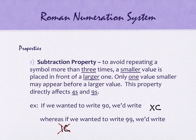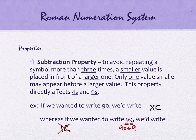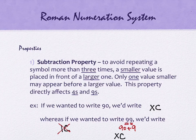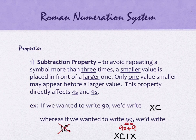Instead, they treat the pieces separately. The number 99 is like having 90 plus 9. We already know XC is 90. For 9, we can't write V plus four I's, so we write IX. So 99 is XCIX — XC is the 90, IX is the 9. It doesn't really matter whether we like it. We're working in their system and using their properties. Think of it like a cultural situation: if you're going somewhere, you follow that culture's guidelines. Same idea here.